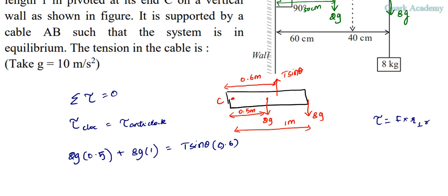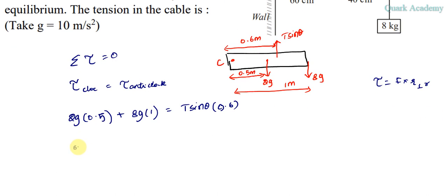Let's substitute g value and theta value and see what happens. 2 into 10 into 0.5 plus 8 into 10 into 1, which is equal to T sine 30 degrees into 0.6. Now we want this T, so T sine 30, sine 30 is 1 by 2, so T into 1 by 2 into 0.6.